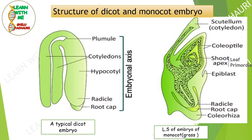Today we are going to study about the structure of dicot and monocot embryo. The term 'dicot' comes from 'di,' meaning two, and 'cot,' which stands for cotyledons. So a typical dicot embryo is one where two cotyledons are present.